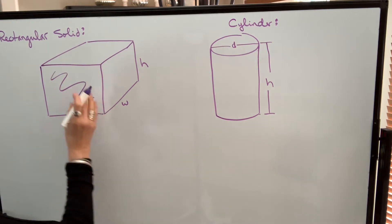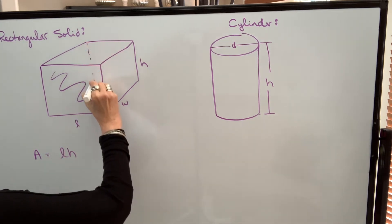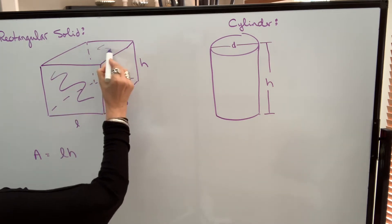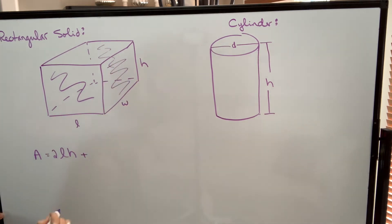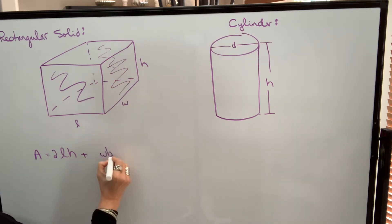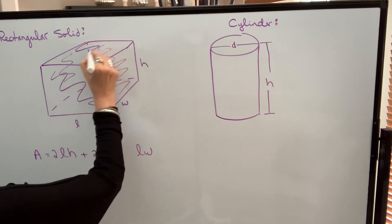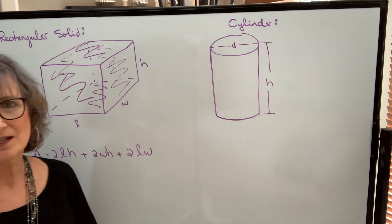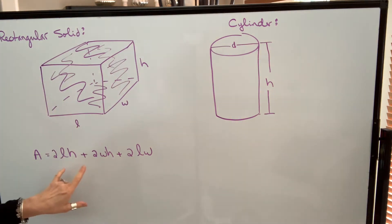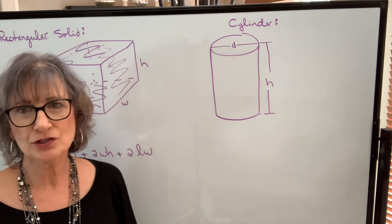The area of the front rectangle would be length times height, and the other end is another rectangle with the same dimension — so there are two of those. Then the side has an area of width times height, and there's another on the other side — two of those. The base would be length times width, and the top is also length times width — two of those. Provided it's a closed rectangular solid, we're going to have six sides. If it has an open top, we would only have one length times width for the bottom. So you just have to pay attention to how many surfaces you're dealing with.